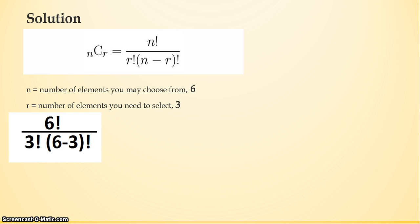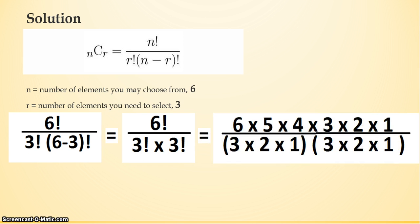So if we plug in our numbers, we get 6 factorial divided by 3 factorial times (6 minus 3) factorial, which simplifies to 6 factorial divided by 3 factorial times 3 factorial. If you write out the factorials, we get 20. There are 20 possible three-topping tacos you can make at Pete's Taco Bar. Remember, when we use the combination formula, we're saying that the order in which we're selecting elements doesn't matter, so we use the combination formula to figure out the number of groups we can make.